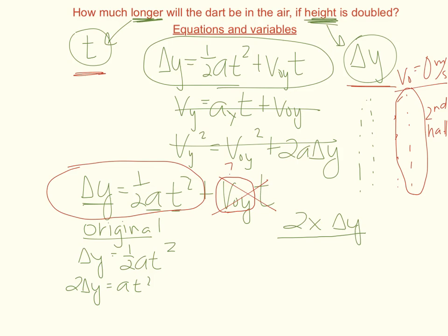I can rearrange again so that I get two delta y divided by acceleration is equal to time squared. And so I get an equation for time where it's the square root of two times delta y divided by acceleration. So that's an expression for the original time.